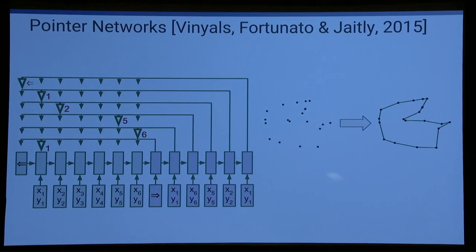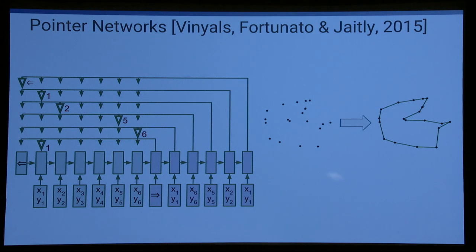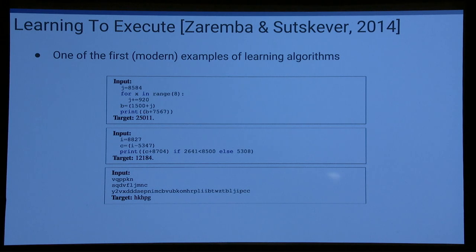We learned from examples — pairs of given points and solutions. For instance, we tried to find the traveling salesman problem solution for a set of endpoints. This architecture, symbolized as boxes, was a differentiable way to induce complicated input-output mappings. There was also work from Ilya Sutskever and colleagues who were trying to map small Python programs to their output — essentially executing them — which is the first kind of program induction where the neural network provides the mapping.